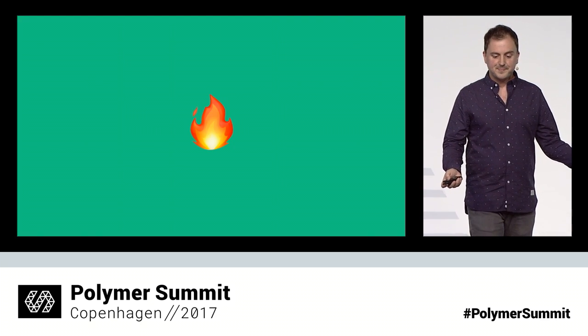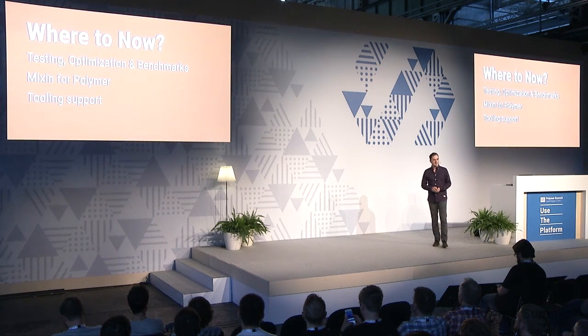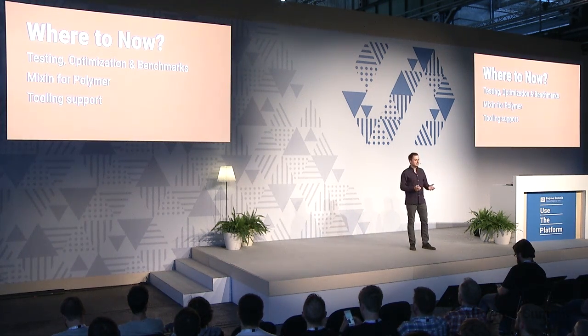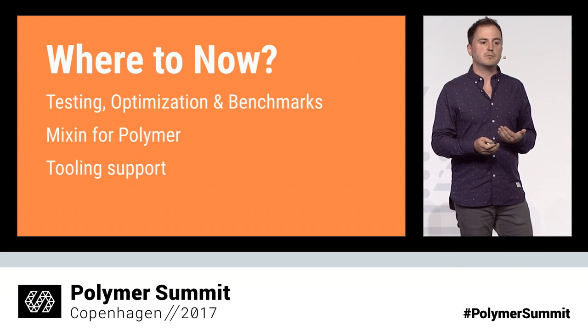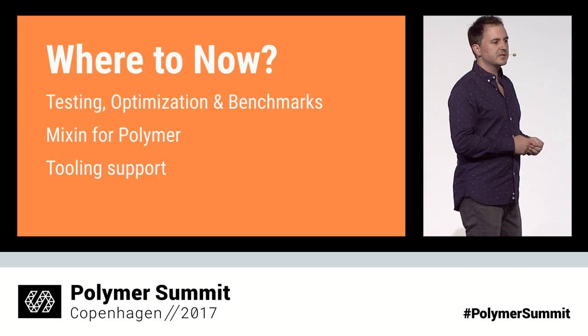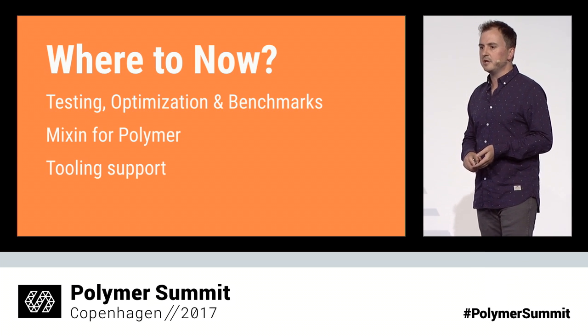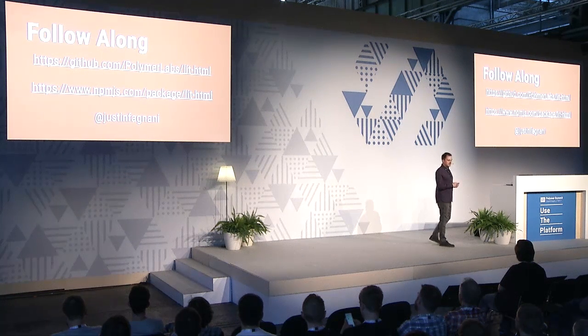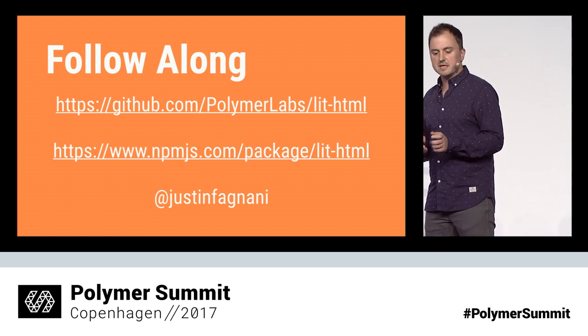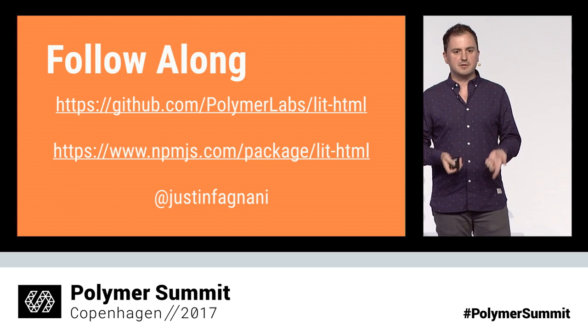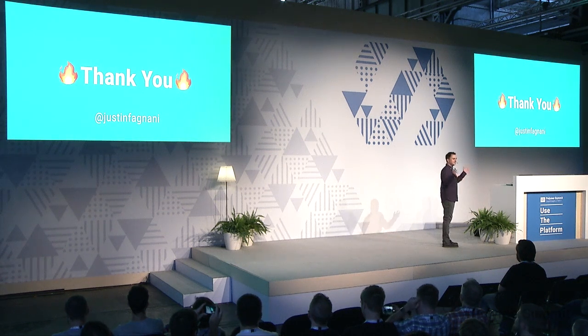And that's basically all of LitHTML. The next question is where to now. This is currently a bit of an experiment, so we have a lot of testing, optimization, and benchmarks to do to make it real. But from what we've already done, we know that LitHTML is very fast and works great on modern browsers. We want to write a mixin for Polymer so you can use this with your Polymer base classes, and we want to add tooling support: syntax highlighting, code completion, hover-over documentation — all the features we give you in our Polymer IDE plugins. There's a GitHub repository in Polymer Labs at lit.html, and you can already install it from npm with 'npm install lit.html'. Thank you very much.